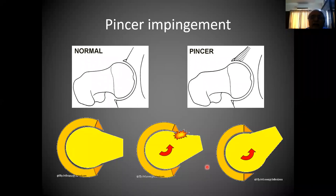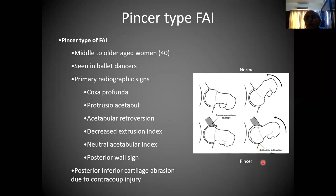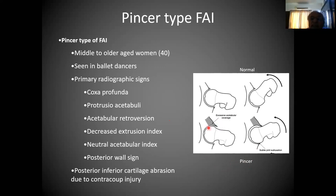Remember exactly what is meant by pincer — it is over-coverage. What happens during this? You see this abutment taking place and sometimes you get posterior impingement because of repeated anterior dipping, and you see reduction of the joint space posteriorly — that is known as contrecoup injury. You always have an injury here repeatedly at the head-neck junction, and then additionally you will start injuring the posterior inferior part of the acetabulum. This is very common with the pincer type.